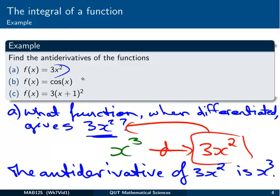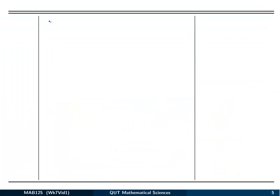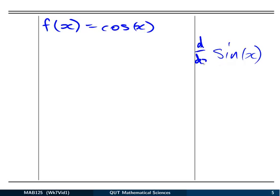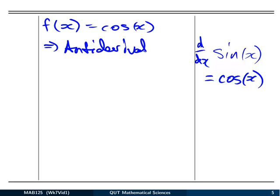So for example in b, we've got f(x) equal to cos(x). So I need to say to myself, what function differentiates to give cos of x? Well, remember sin(x) and cos(x) cycle between each other in differentiation. So the derivative of sin(x) is, well basically from your rules, it's cos(x). So this tells me that anti-derivative is just sin(x).